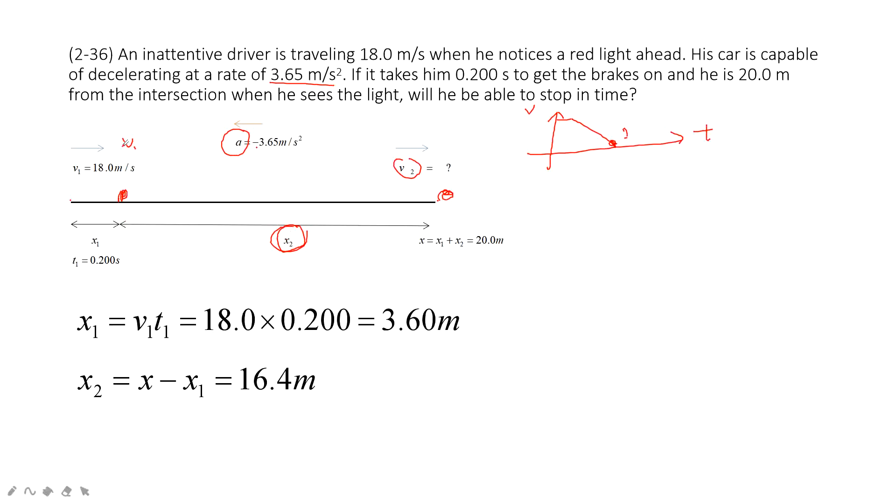Now we know x2, we know v1, and we know acceleration. Very easily, we use this equation and can find v2. We find v2 is 14 meters per second.